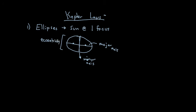Every planet orbits in this elliptical shape around the sun, which sits at one focus point. The other focus is an imaginary point — nothing is actually there, but it geometrically describes the orbit. Kepler's second law states that planets sweep out equal areas in equal amounts of time.